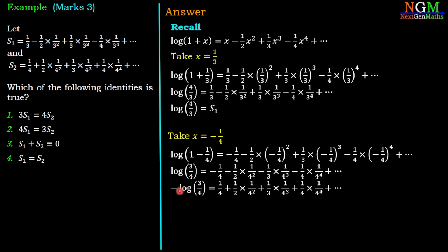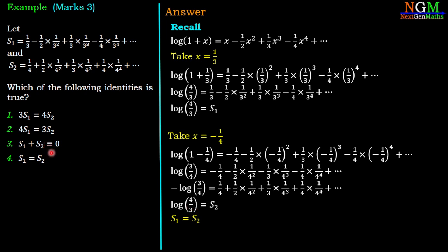Taking the minus sign to the other side: −log(3/4) = 1/4 + 1/2 · (1/4)² + 1/3 · (1/4)³ + 1/4 · (1/4)⁴, which is nothing but S2. On the left-hand side, taking the minus as a power of 3/4 gives log(4/3) = S2. So S1 = log(4/3) and S2 = log(4/3), therefore S1 = S2, which is option number 4 — the correct answer.